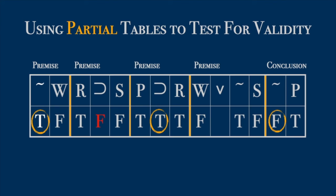We can't get the pattern of all true premises and a false conclusion. No matter how hard we try, it's impossible. So that means it's a valid argument.